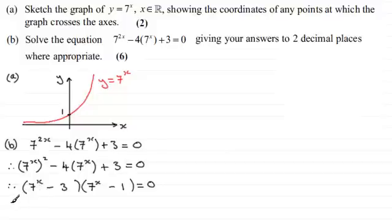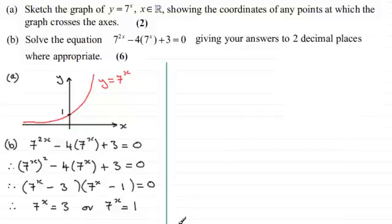Now that means that each of these factors could equal 0. So that means that therefore 7 to the power x must equal 3. Or if this was to equal 0, 7 to the power x would equal 1. And so if we just work out each of these equations separately.